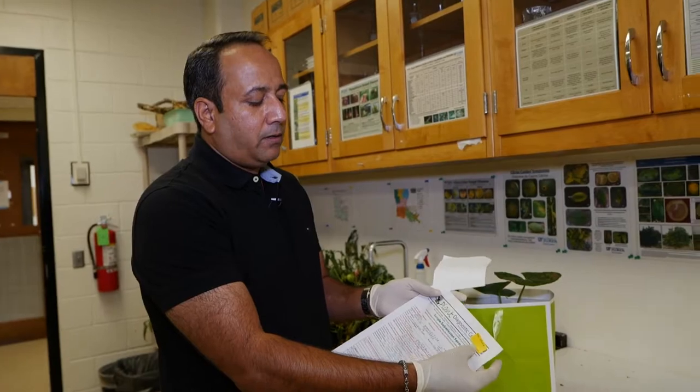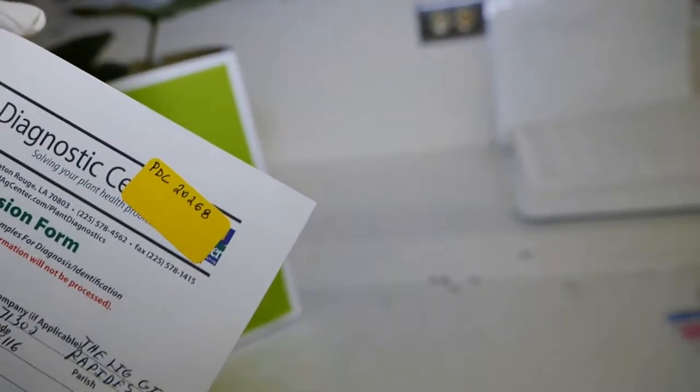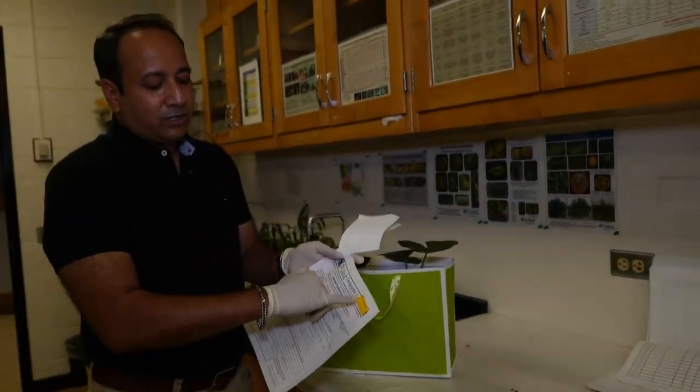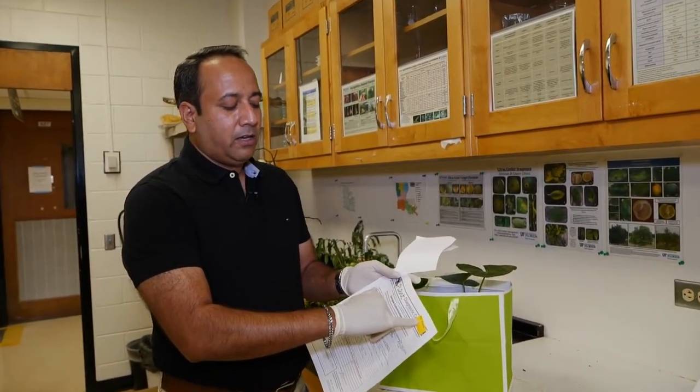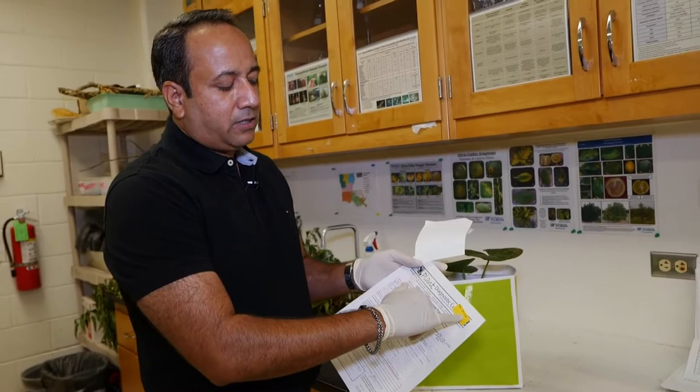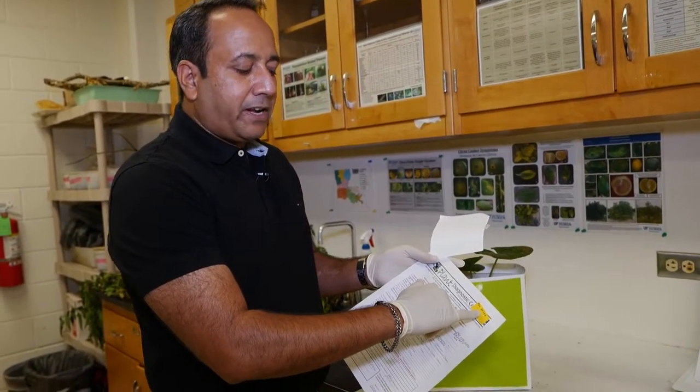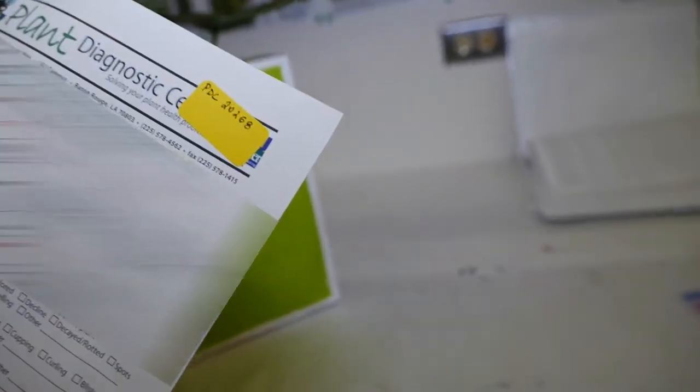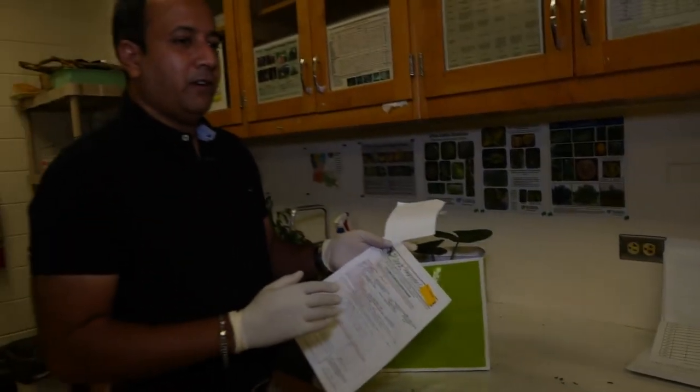When a sample comes in, we log it with a unique number that will stay permanently with this sample for the time period we keep our records. It's a five-digit number—the first two digits are the year, and the last three digits are the sample number. You can see even with COVID-19 we are at 268 samples this year.